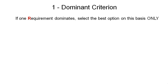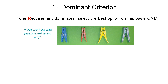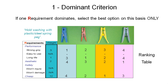The first example is the dominant criterion method. We can use this method generally only if one of the requirements dominates. Looking at these four peg examples with a ranking table, each peg is ranked on different performance requirements: aesthetics, safety, etc. We'll notice that down the bottom, low cost is very highly weighted at 12, compared to performance, long life, and aesthetics which are down at 3, 2, and 1.